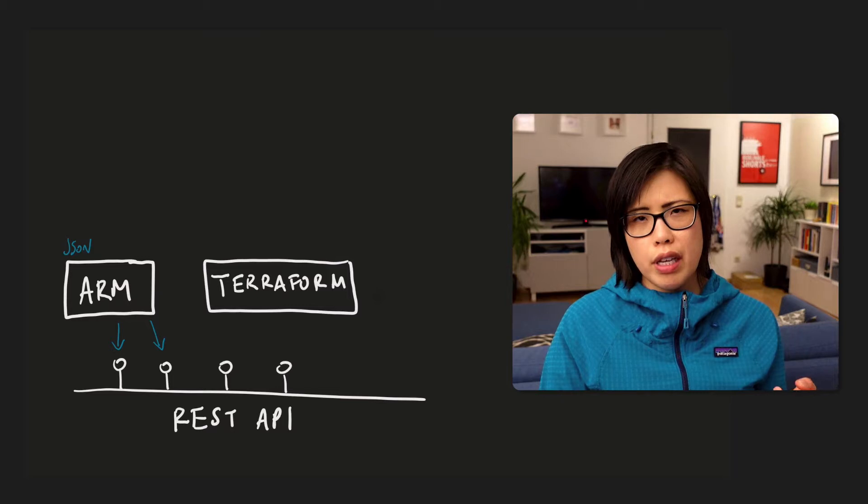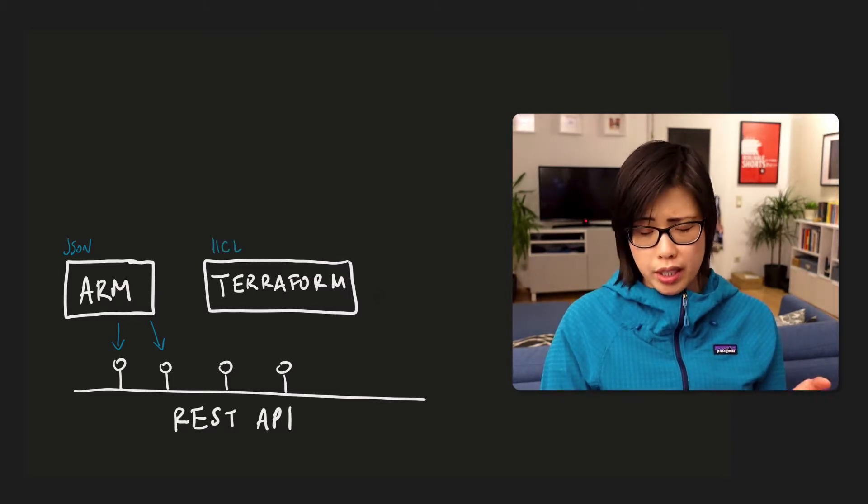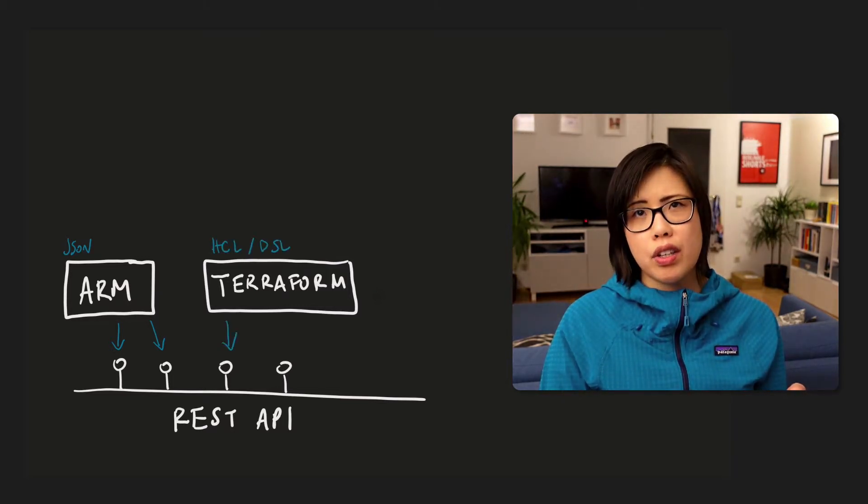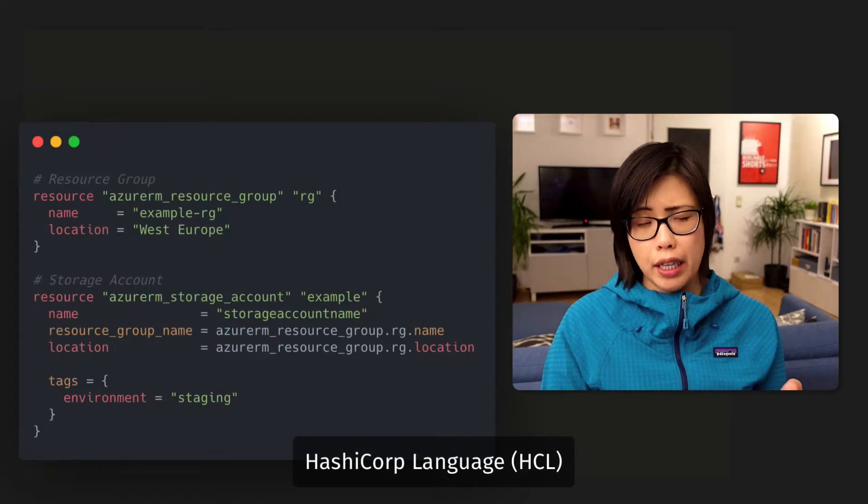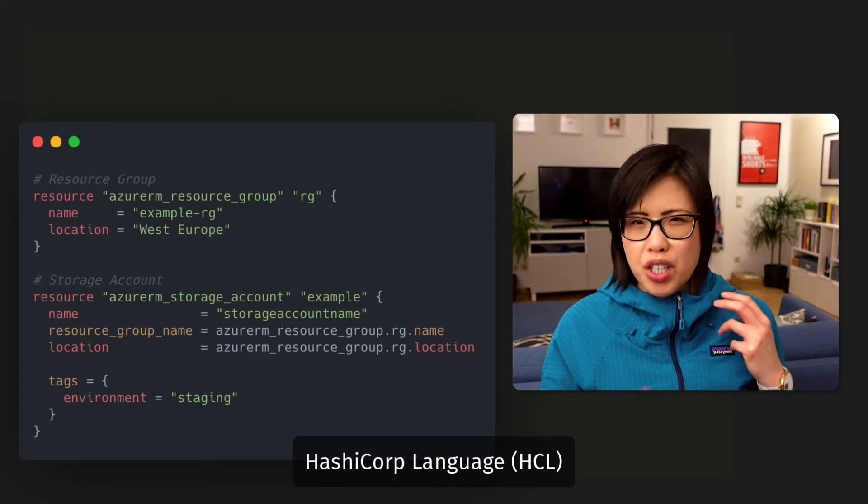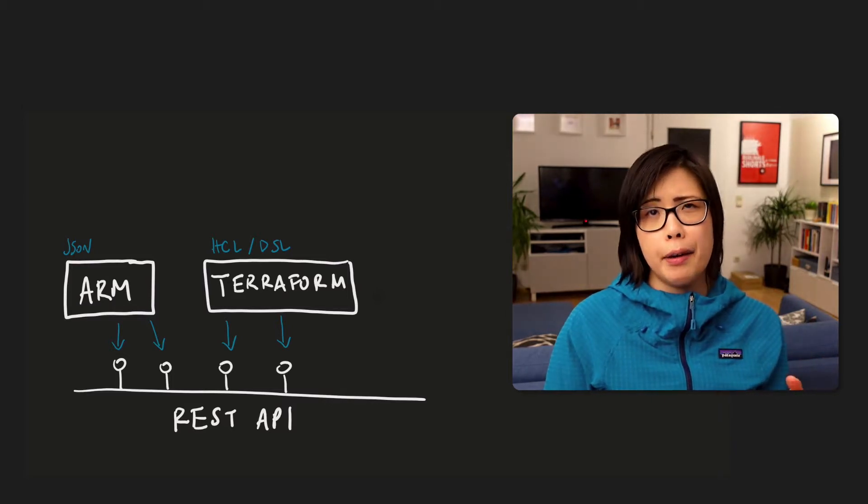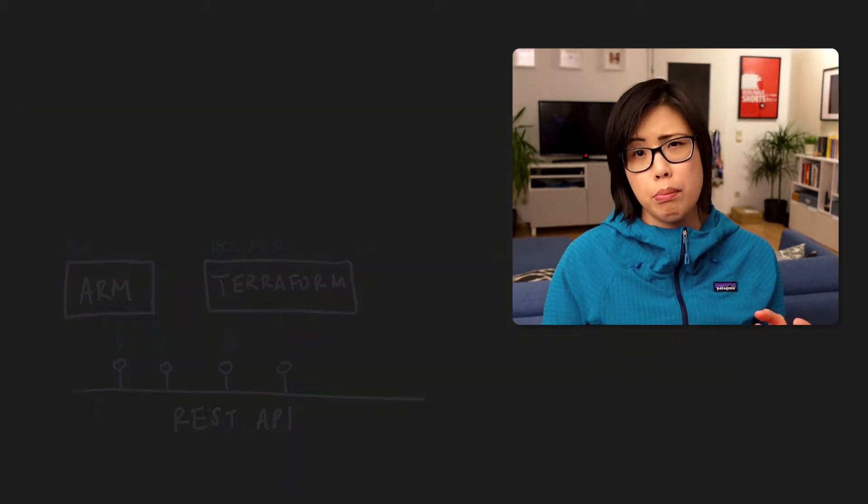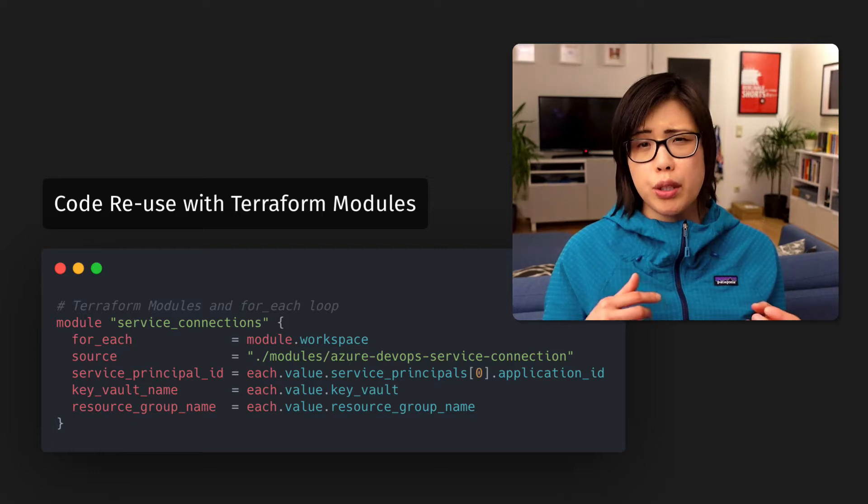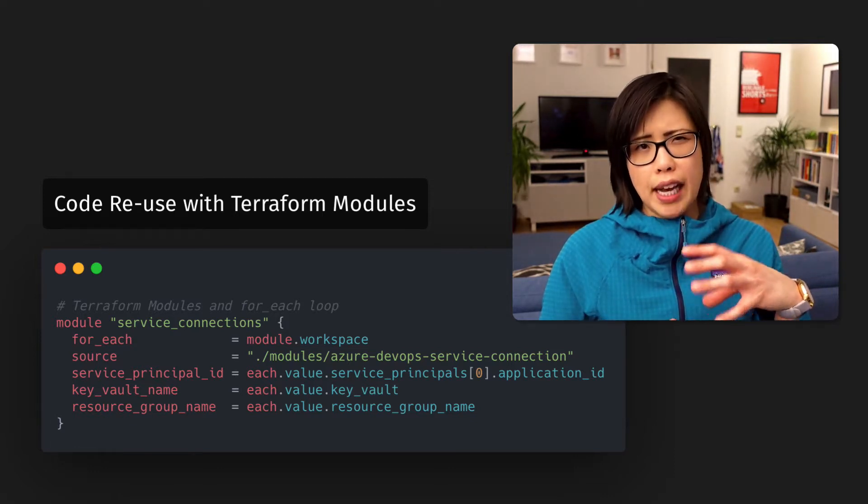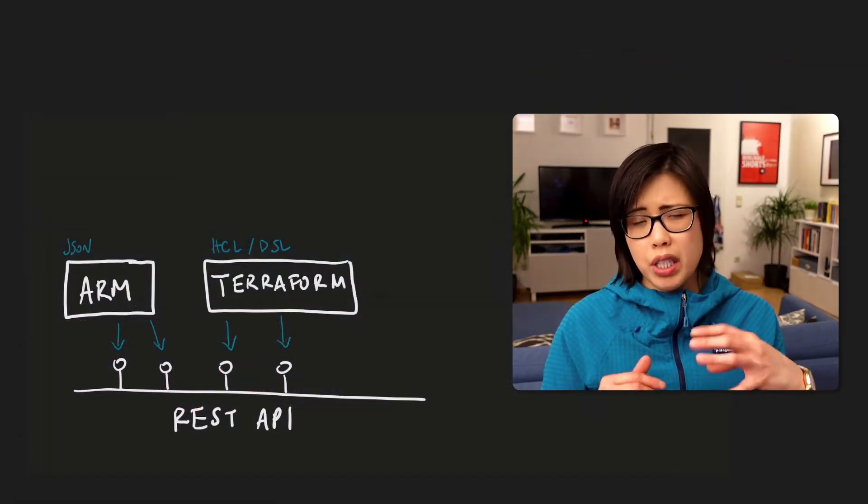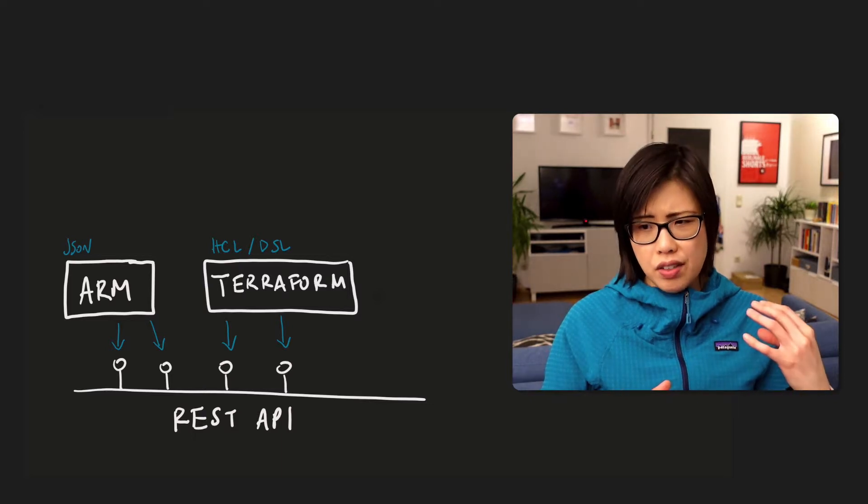So Terraform is written in a domain-specific language or DSL, and this one is called HashiCorp language or HCL. And it just was much easier to read. I could easily put in comments, and I could also use modules for reuse, like pieces of code. That is, even today, so much easier to do in Terraform than it is in ARM.